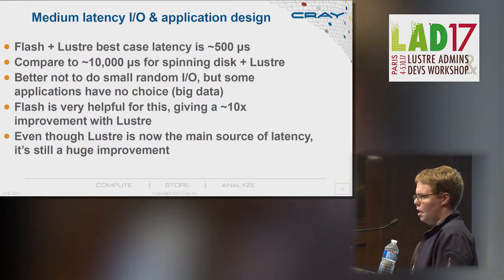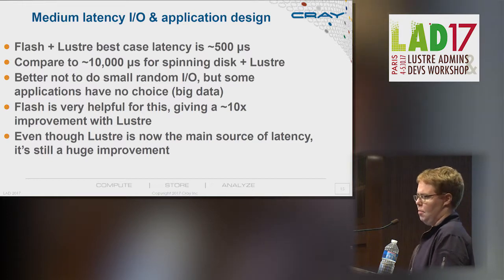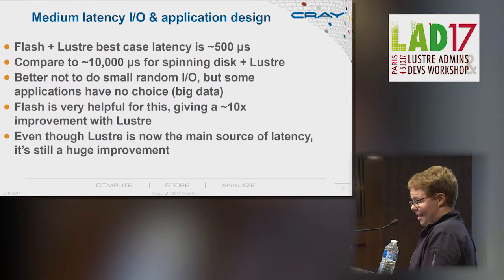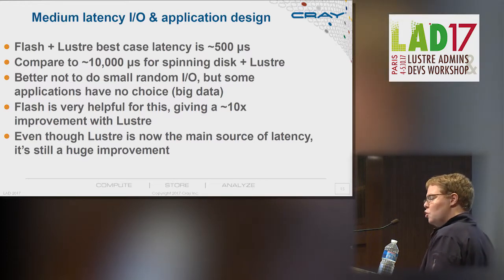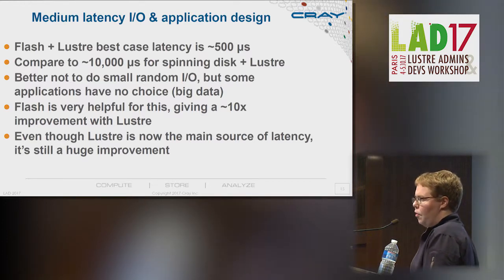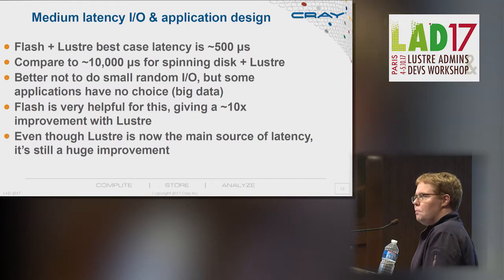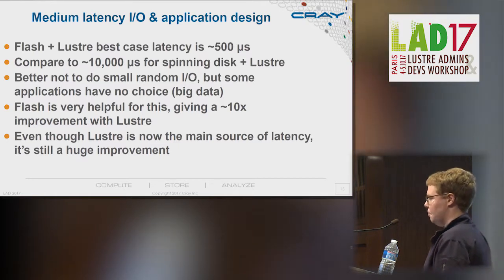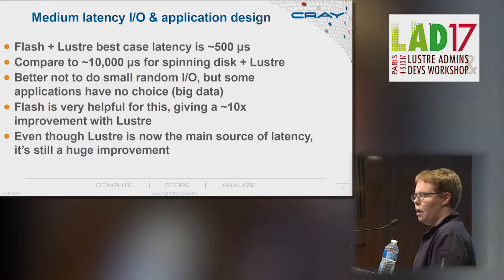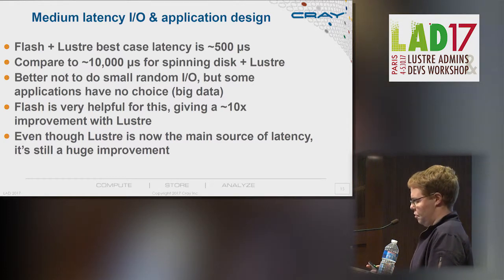Talking about medium-latency things: we're out of the world of spinning disk and in flash, so now maybe 500 microseconds for Lustre and flash as an estimate. That's 10 to 20 times better than spinning disk and Lustre. So you really do get a lot of benefit from Lustre and flash — it's not all the possible benefit, but you do get a lot. You'd be best advised to avoid purely latency-sensitive workloads on a parallel file system, but if you're going to do it anyway, you'll be much happier with flash in your Lustre file system than spinning disks.